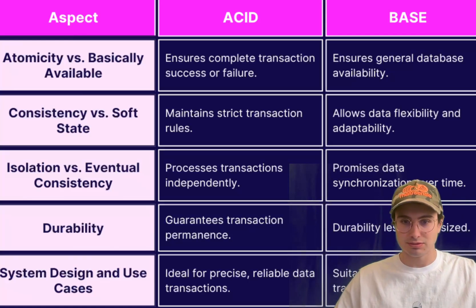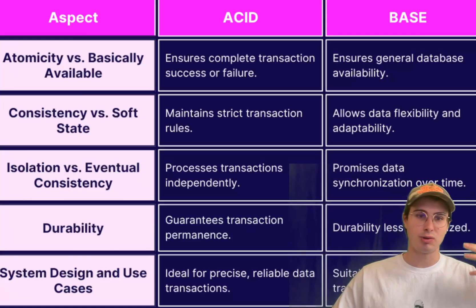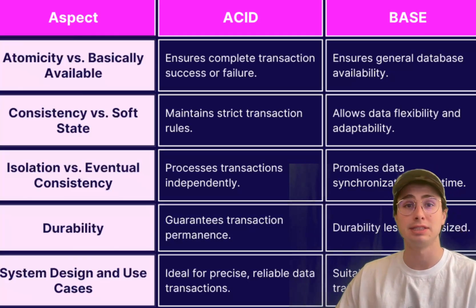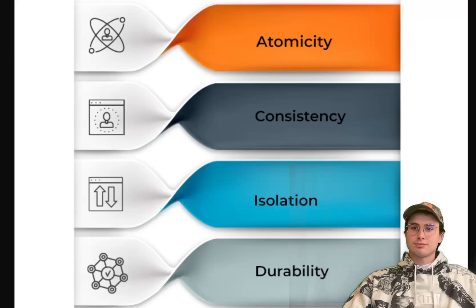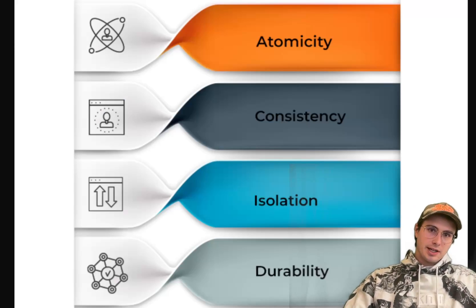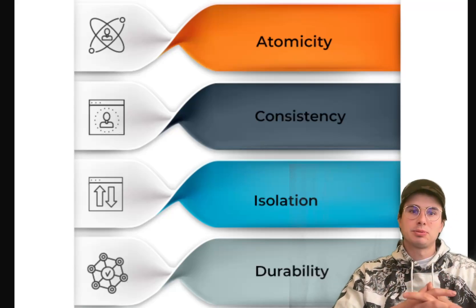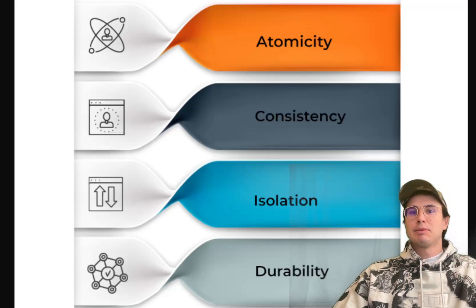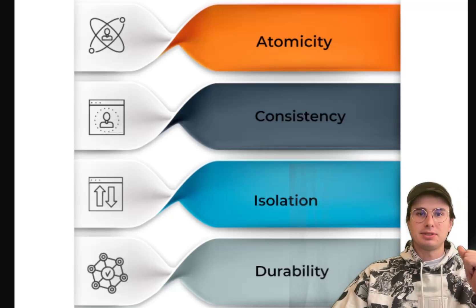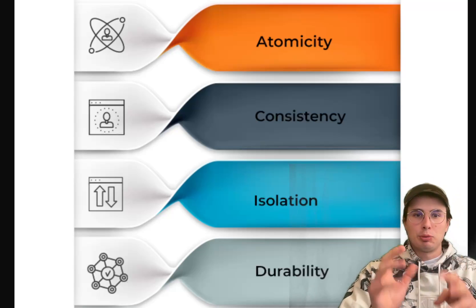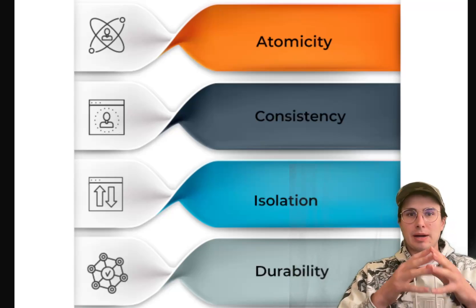So now we've kind of covered exactly what ACID is, framework for deciding if you need it, I want to dive into some best practices for implementing ACID within your database. So in terms of how you want to kind of approach introducing ACID principles into your use case, number one, assess your requirements kind of using that framework I just laid out. And then make sure you have an appropriate database system for ACID properties.